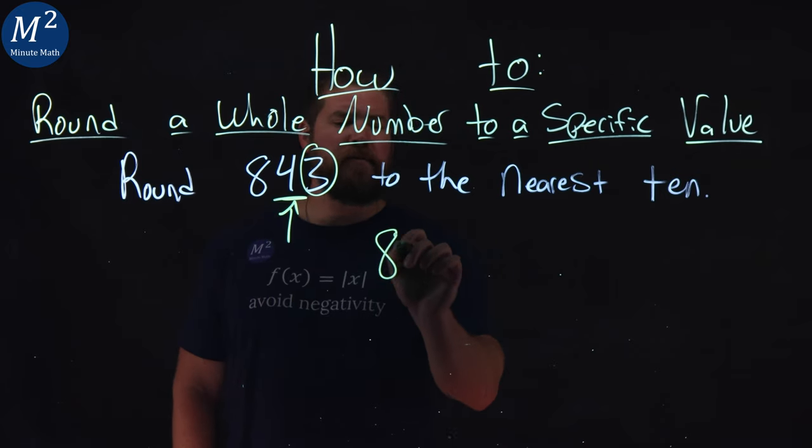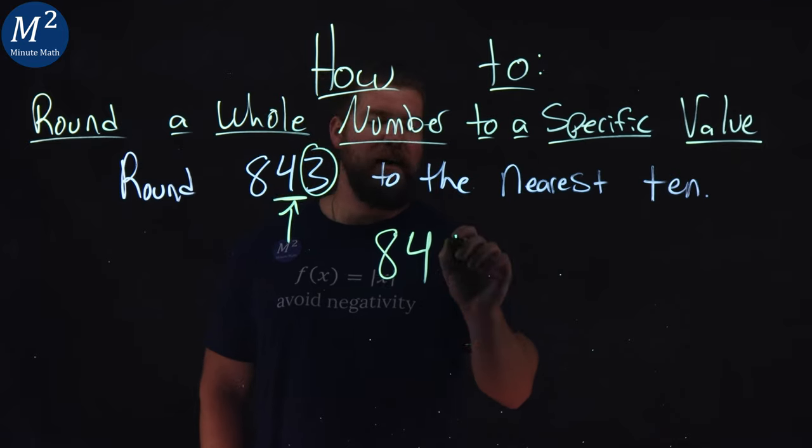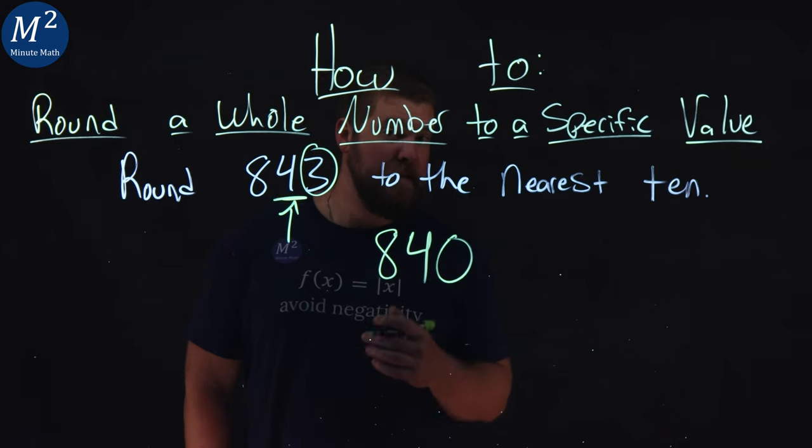Meaning, we write the first two numbers, 8 and 4, and instead of 3, we have a 0. And so we round it down here.